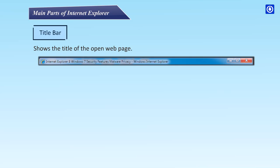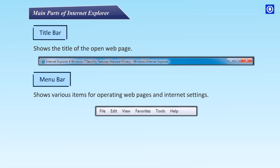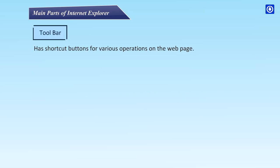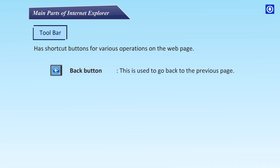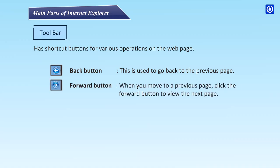The main parts of Internet Explorer are: the title bar, which shows the title of the open web page; the menu bar, which shows various items for operating web pages and internet settings; and the toolbar, which has shortcut buttons for various operations on the web page. The back button is used to go back to the previous page.